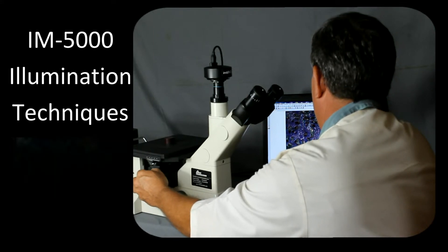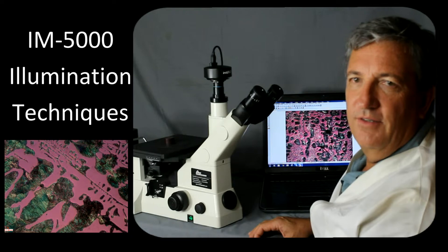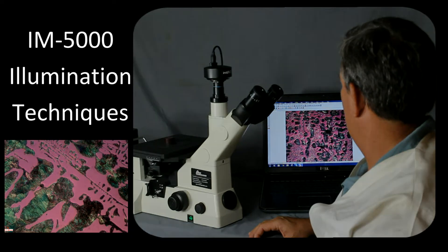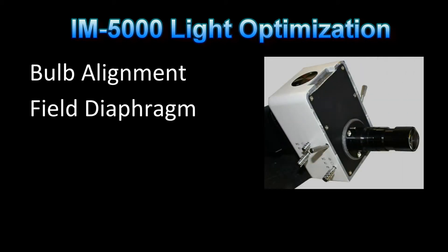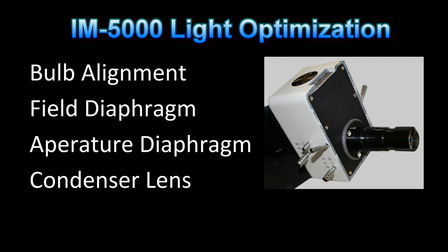To optimize the IM5000, we want to align the bulb, set the field diaphragm and the aperture diaphragm, as well as defocus with the condenser lens.